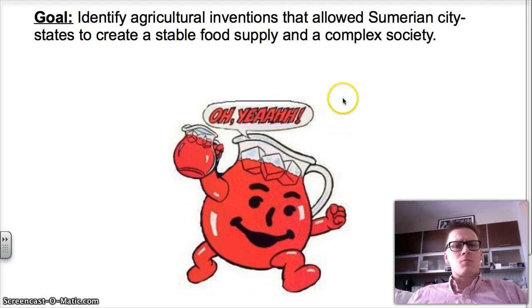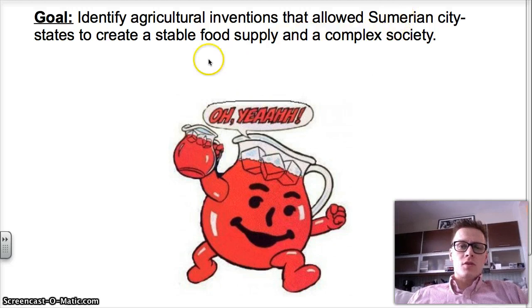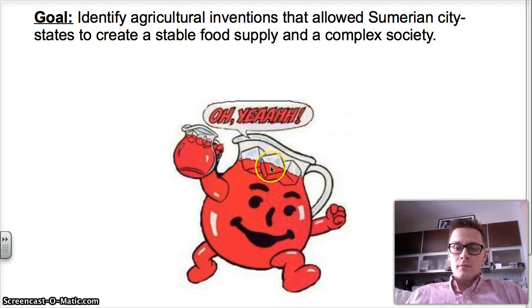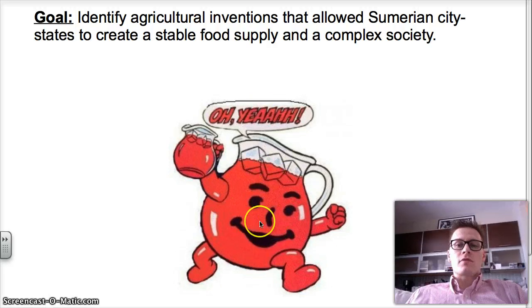So I've been talking about irrigation systems. Irrigation systems supply water to crops. They take the water from a river and they divert it through trenches and canals into a field where there's crops. So that's adding your water to the pitcher of Kool-Aid. But that's not enough.